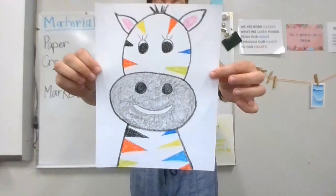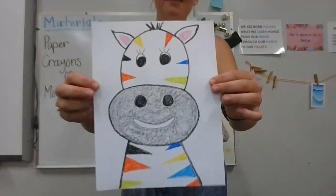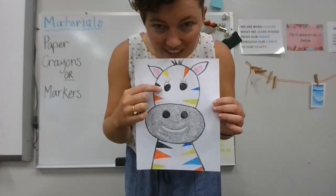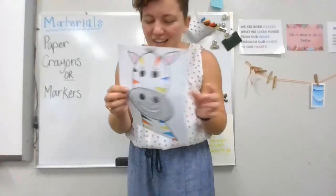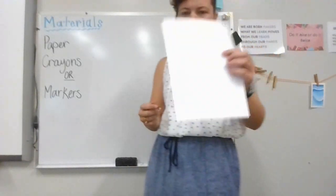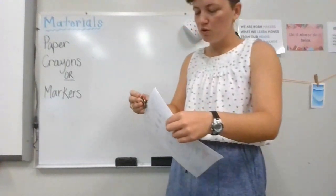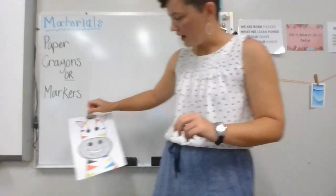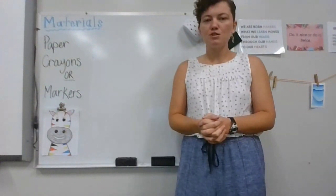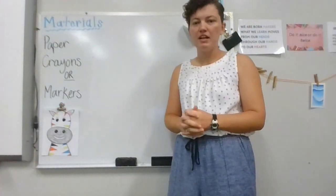But I did my zebra as a silly zebra. If you notice, he's got beautiful rainbow stripes and eyelashes. What you need today is a piece of paper, and you can use crayons or markers. I used crayons, but you can use either. If you like markers better, you can use your markers.